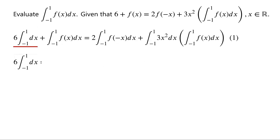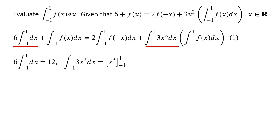6 times the integral of dx from negative 1 to 1 is equal to 6 times 1 minus negative 1, which is equal to 6 times 2, which is 12. The integral of 3x squared dx from negative 1 to 1 is equal to x cubed from negative 1 to 1, which is equal to 1 minus negative 1, which is 2.